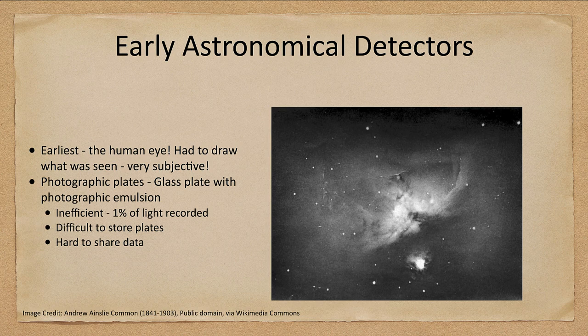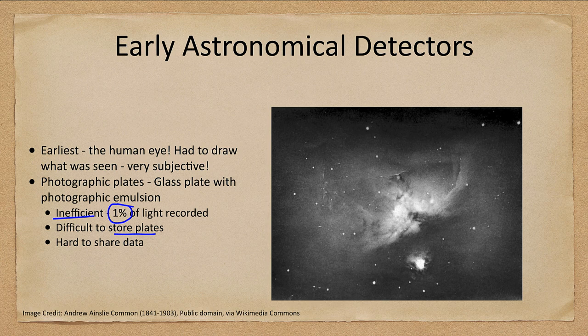The problem with photographic plates is that they were inefficient — only one percent of the light is recorded. They're also difficult to store. First of all, they're glass, so they have to be stored carefully. And because of the photographic emulsion on them, they would have to be stored in a very climate-controlled area of specific temperatures and humidities. Of course, to share the data directly would be difficult. If you want someone else to see the plate, you either have to send them the plate carefully, or they have to come to your location where the plates are stored.